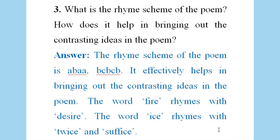We shall now look at the final question which actually appears as the textbook exercise, so far as the poem Fire and Ice is concerned. The question is: what is the rhyme scheme of the poem? There is another question: how does it help in bringing out the contrasting ideas in the poem? The answer to the first question: the rhyme scheme of the poem is A-B-A-A, then B-C-B-C-B.